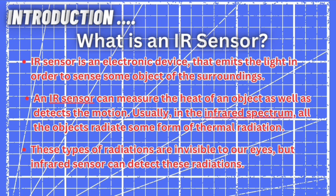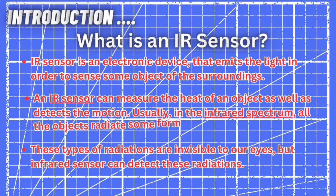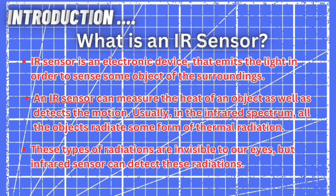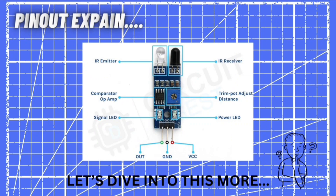An IR sensor is an electronic device that emits light in order to sense objects in the surrounding. An IR sensor can measure the heat of an object as well as detect motion, usually in the infrared spectrum. All objects radiate some form of thermal radiation, and according to that thermal radiation the IR sensor can sense heat. This type of radiation is invisible to our eyes, but an infrared sensor can detect it very easily.